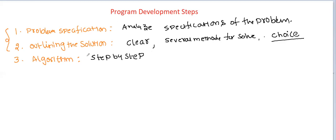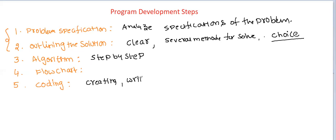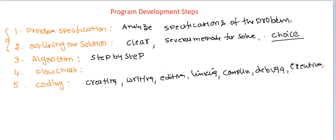For the assumed solution we write the algorithm. After writing the algorithm, if required you can also write a flowchart; otherwise you can directly move to coding. Coding is the process of creating, writing, editing, linking, compiling, debugging, executing, and maintaining the program — all these steps are involved in coding.